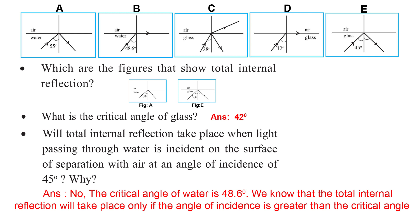Total Internal Reflection occurs. The figures that show Total Internal Reflection are Figure A and Figure E. The critical angle of glass is 42 degrees.